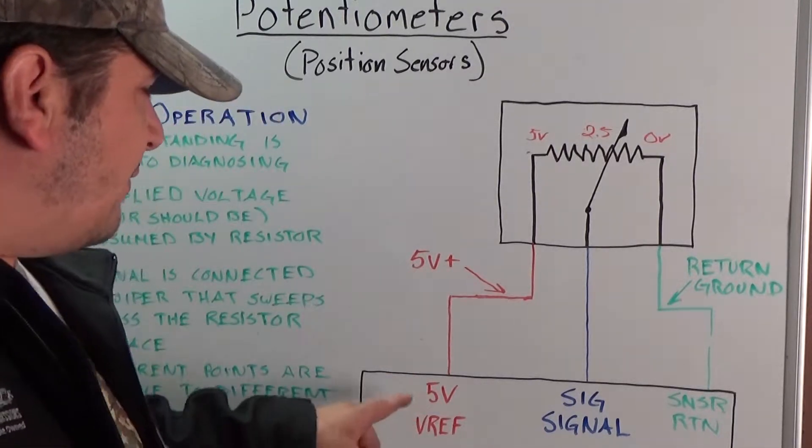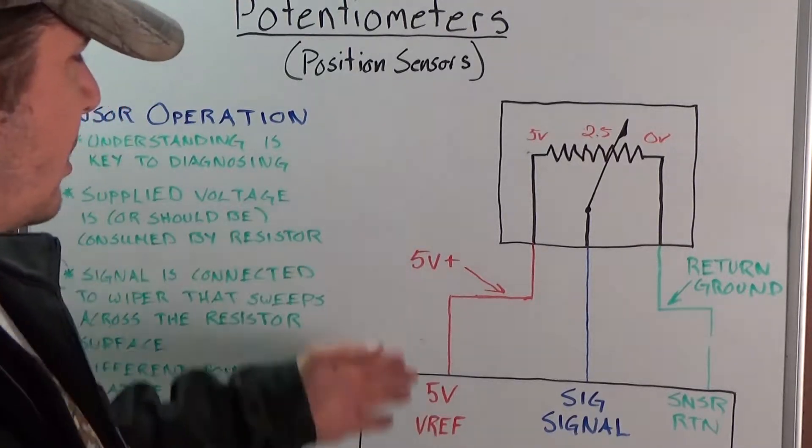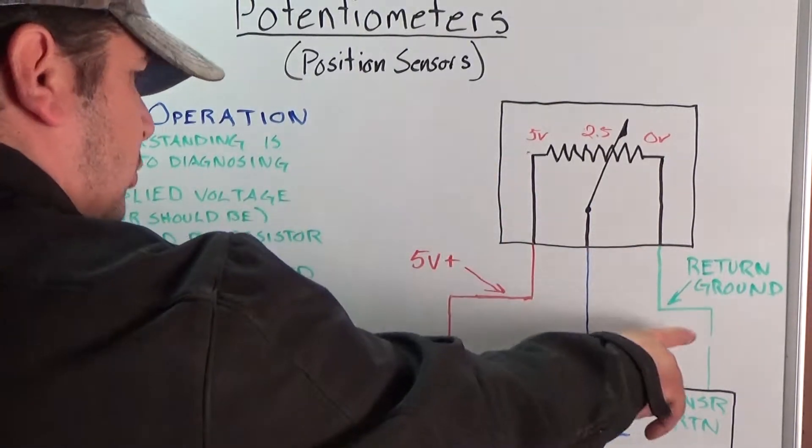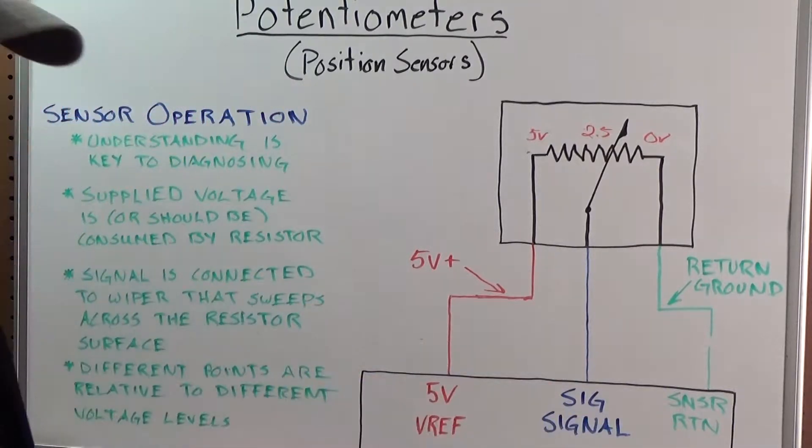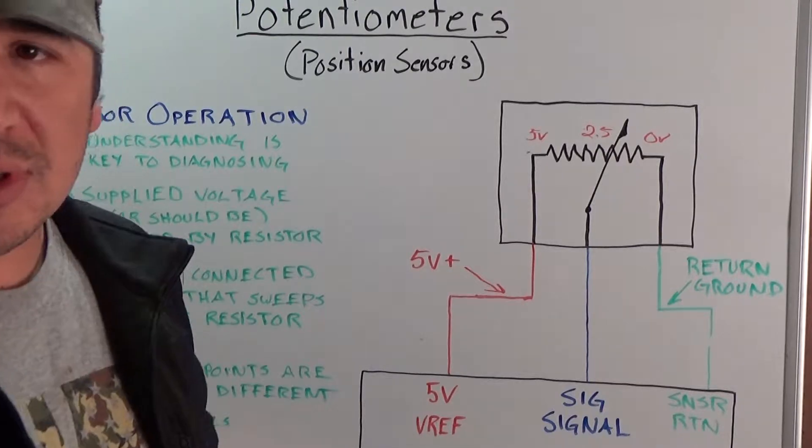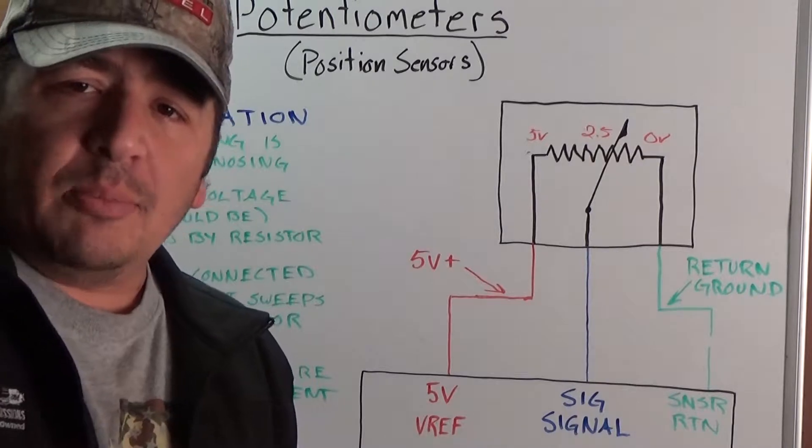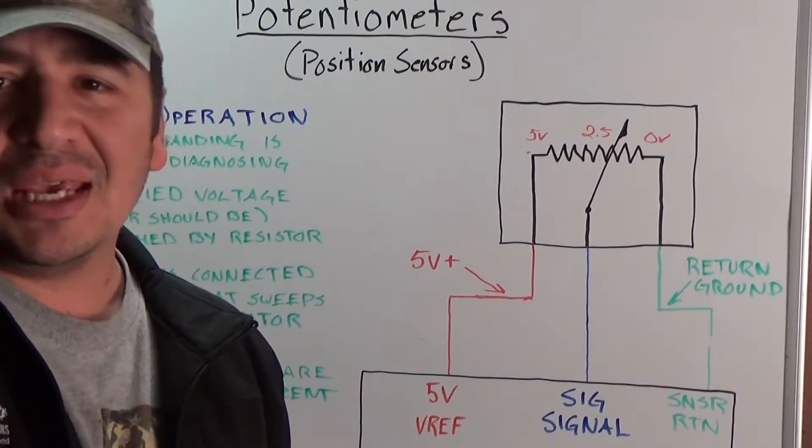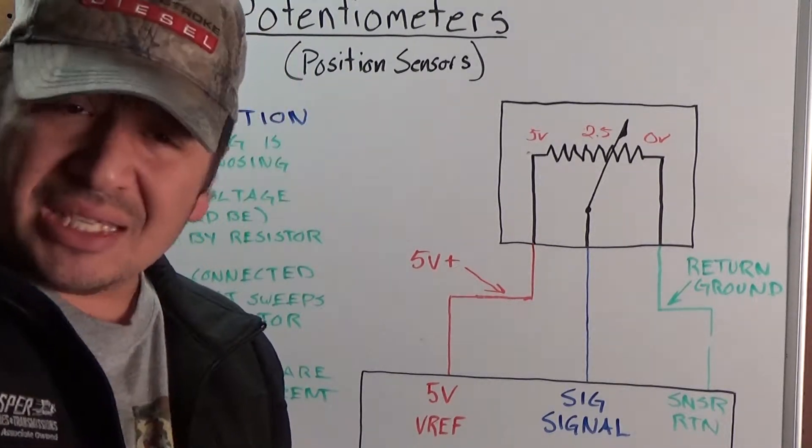It may be labeled as 5V, 5V plus, V ref, or ref for the power side. And your ground side could be called sensor ground, sensor return, ground, anything to indicate that this is the ground side and this is the power side. And then your other wire is going to be your signal. It could be labeled, in the case of a throttle position sensor on your wiring diagram, it could be labeled TPS, TPS signal, TPS sig, it could be labeled just sig or signal.